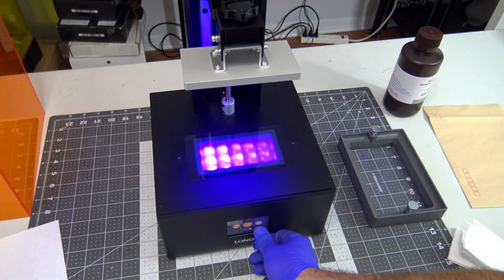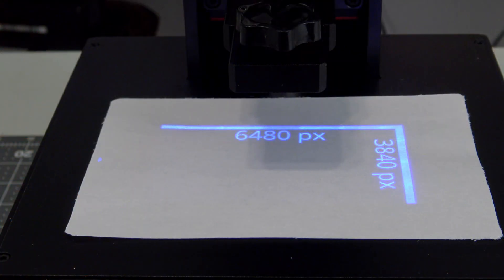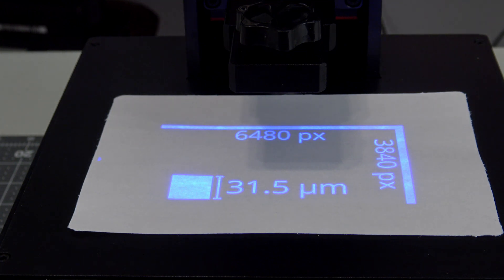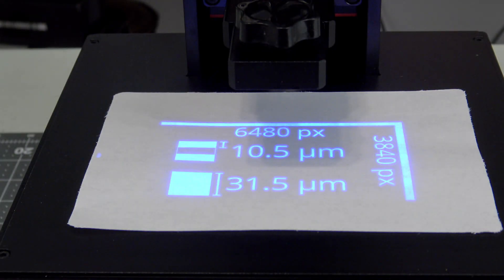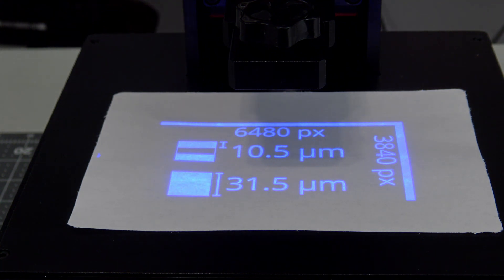The Orange 4K has a 405 nanometer UV LED panel, which shines through a 5.5-inch 4K LCD screen with a resolution of 6480 by 3840 pixels. At that size, each pixel would have a side length of 31.5 microns. However, the Orange 4K has two variants. A color version with the LCD screen with that 31.5 pixel resolution, and a mono version with an LCD that splits a single pixel into three sub-pixels. That effectively gives the mono version a Y resolution of 10.5 microns, while the X resolution remains at 31.5 microns.